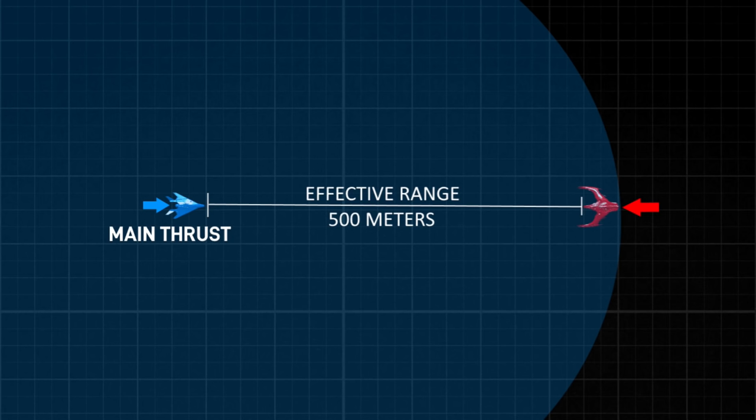Also, increasing main thruster power on all fighters, including light fighters, medium fighters, heavy fighters, is, I think, the kind of way to go.